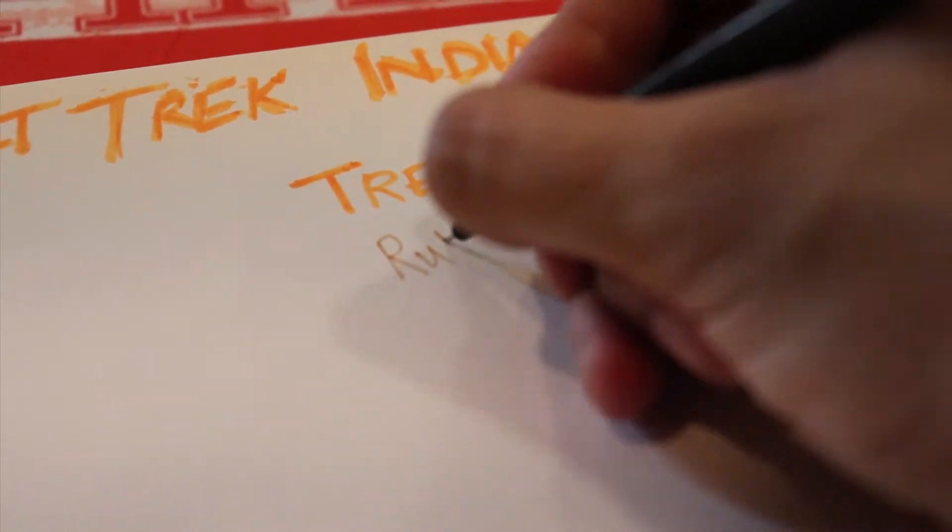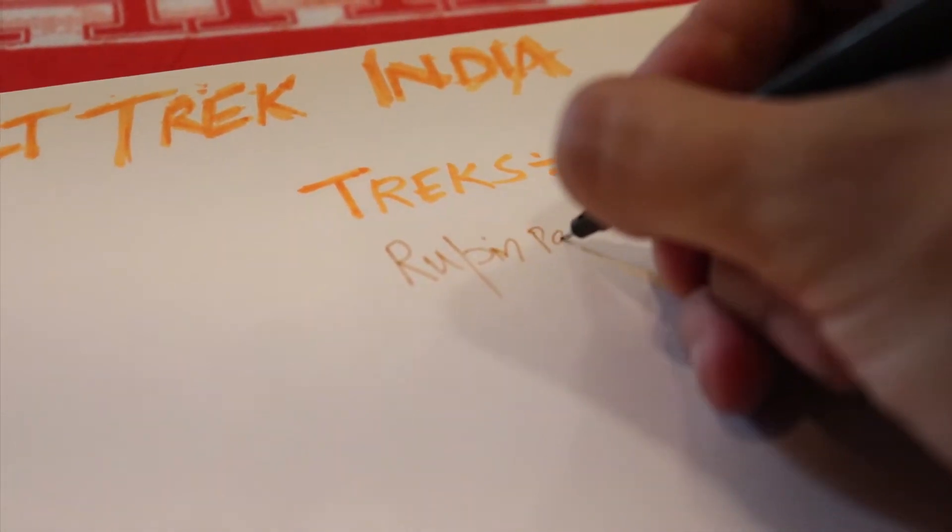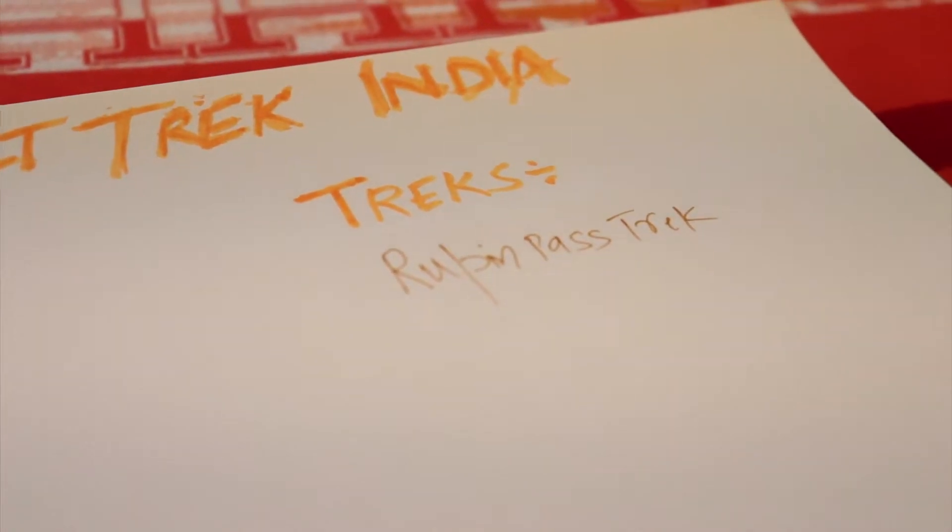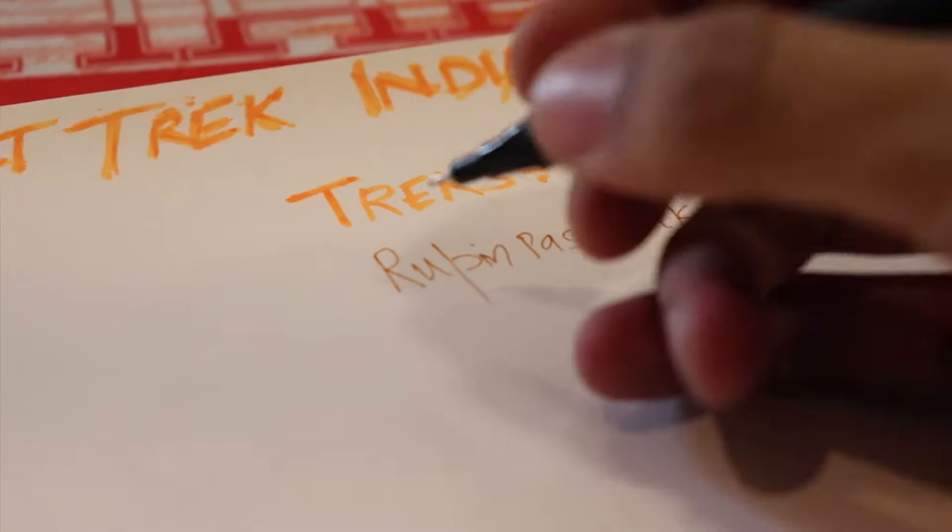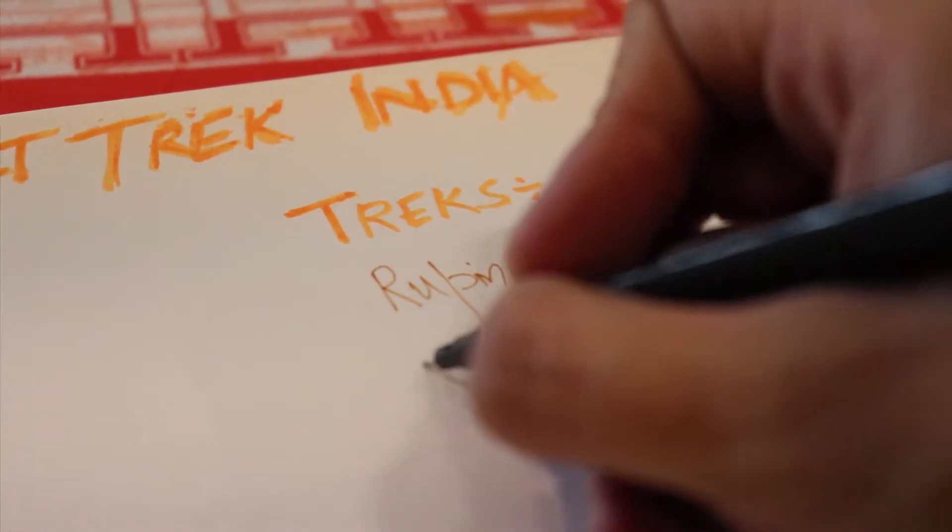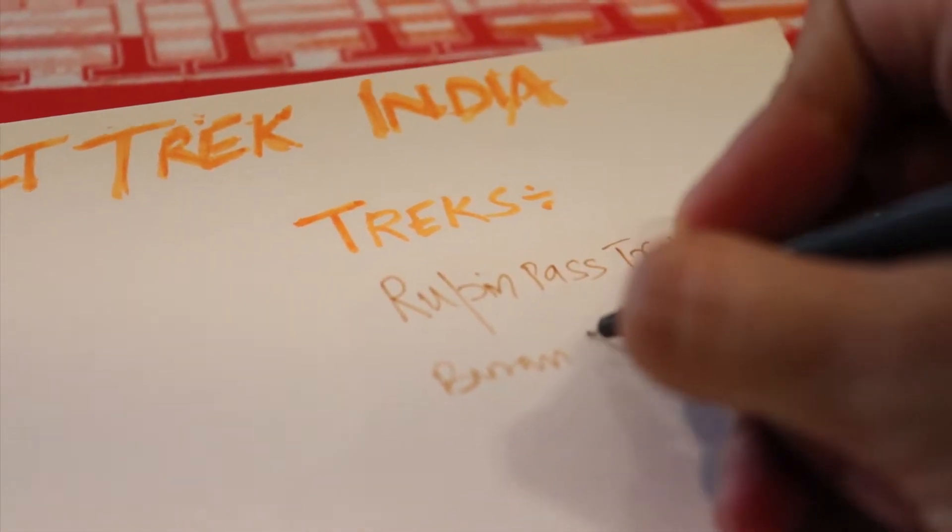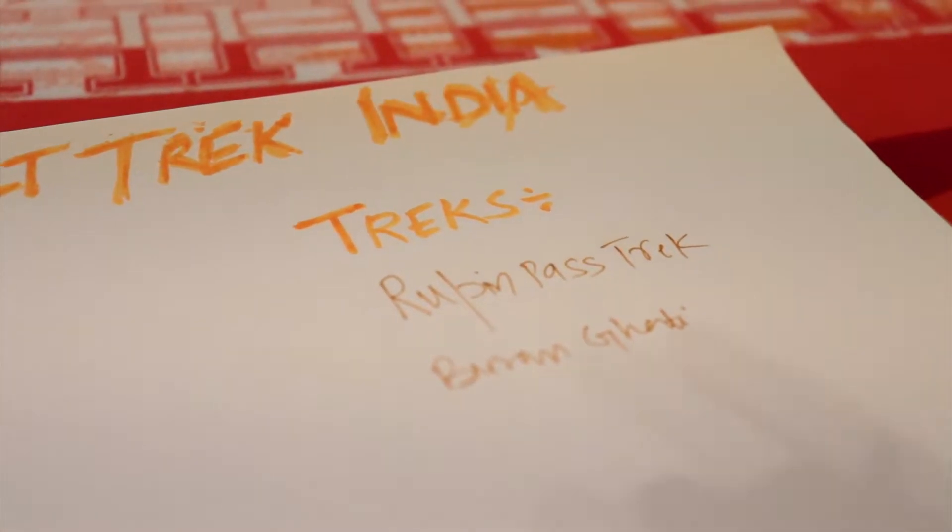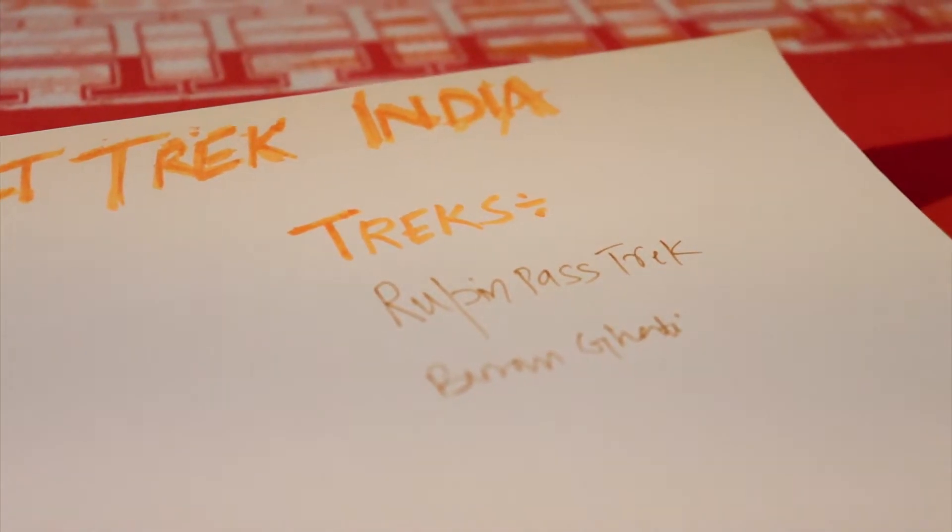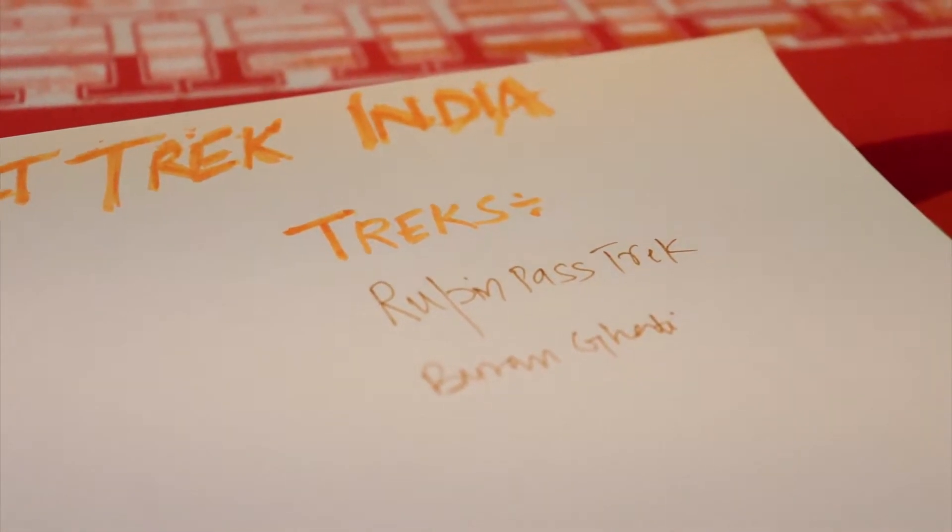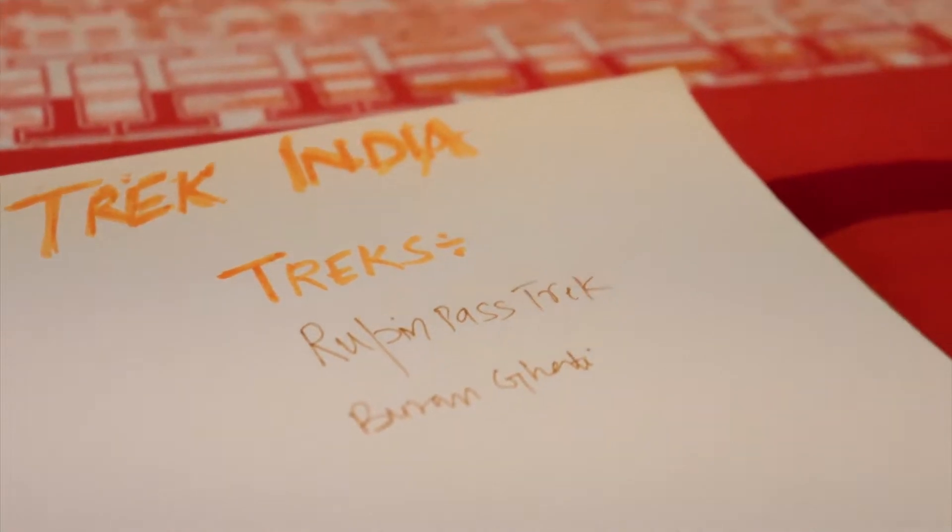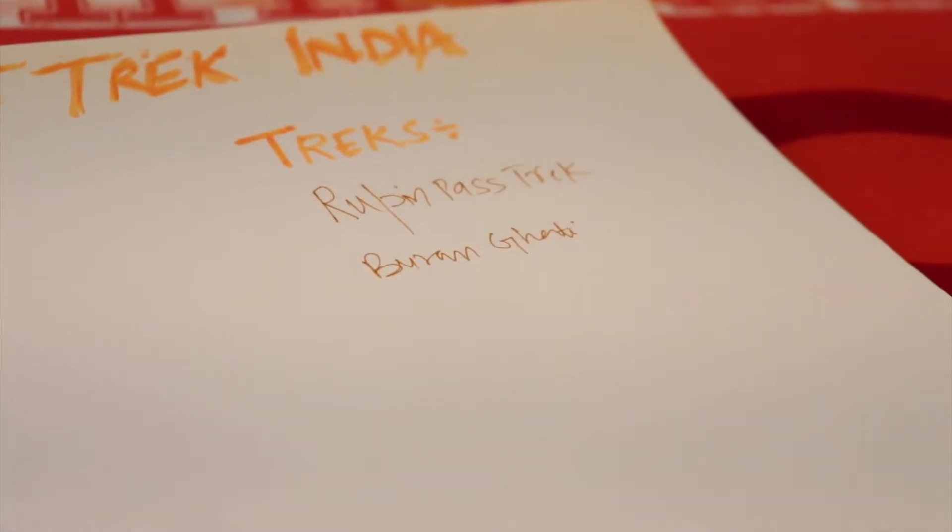Rupin Pass - a very famous crossover track from Uttarakhand to Himachal. Then there's Buran Ghati, also a very good track with an almost 100-meter glide where you fall from there. Very exciting in photos. The third track is Stock Kangri track. This track is in the region of Ladakh, and Ladakh is famous for Himalayas, mountains, and everything.